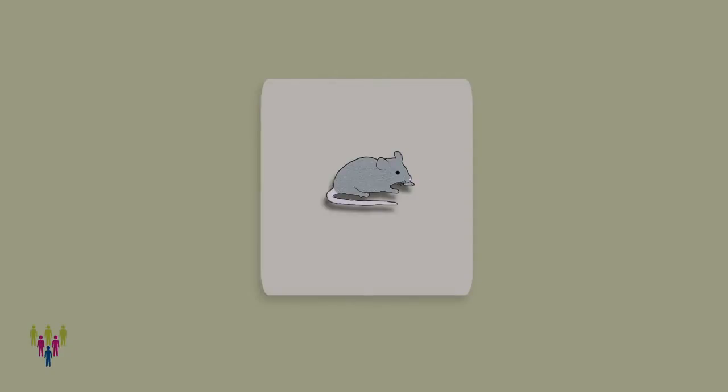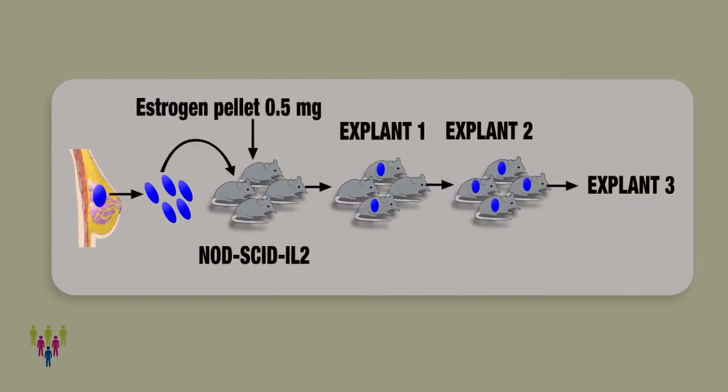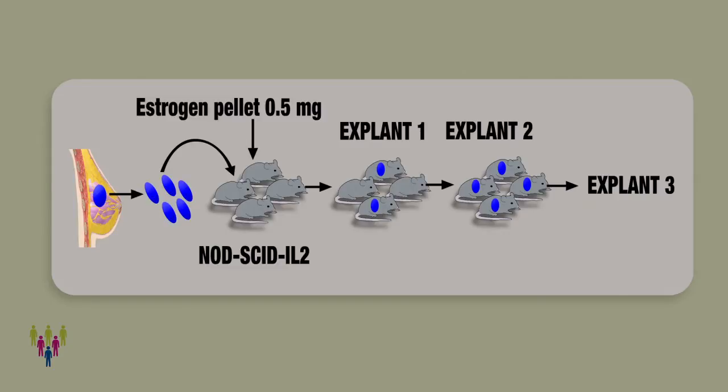In terms of the different types of xenotransplantation for patient-derived xenografts, we normally consider whether the tumor will be implanted subcutaneously, similar to what we do with cell lines, or whether we'll perform an orthotopic transplantation — where we try to recapitulate where the primary tumor resides. For instance, implanting a breast tumor into a mammary fat pad, or kidney cancers into the sub-renal capsule. The two most common types are orthotopic or subcutaneous transplantation.